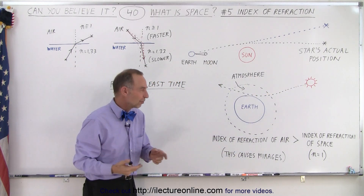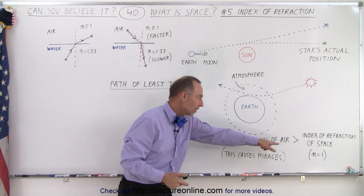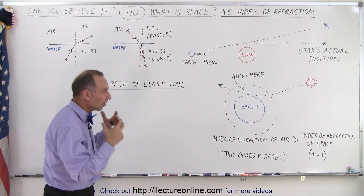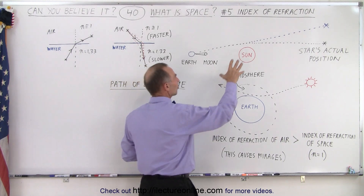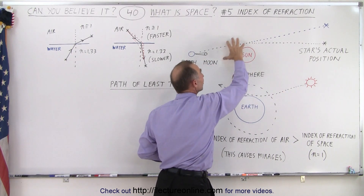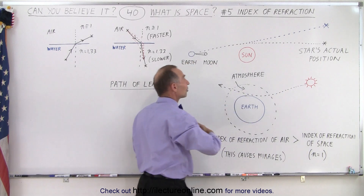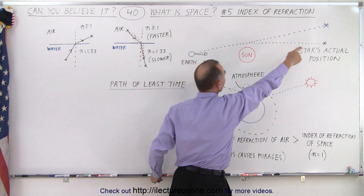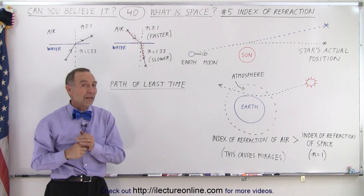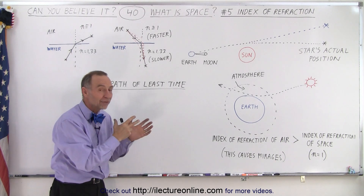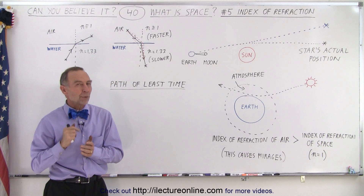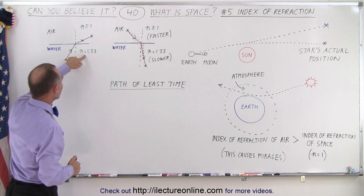So either it does that because space is warped and light follows the warp of space, or the index of refraction is less near a large object causing light to bend. Here the effect of the atmosphere would be greater than the effect of the index of refraction change caused by the earth, and therefore you still have the light bending outward because the atmospheric index of refraction is quite a bit bigger relatively speaking than the index of refraction of space. So again, something happens to space when you put a large object in it.